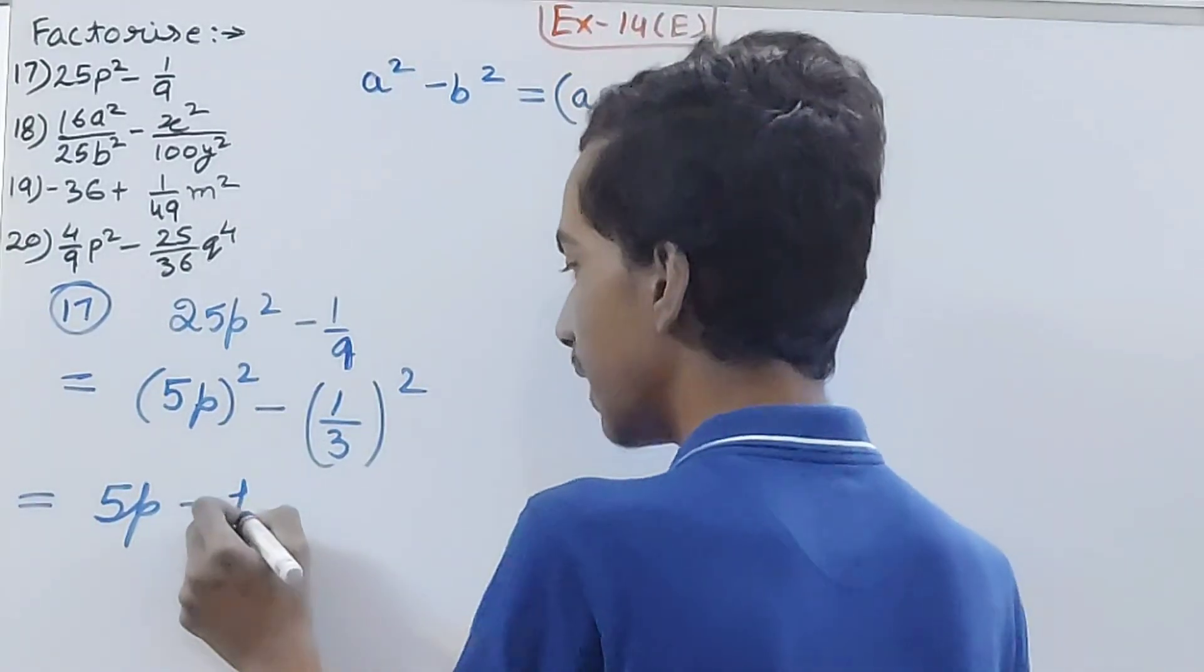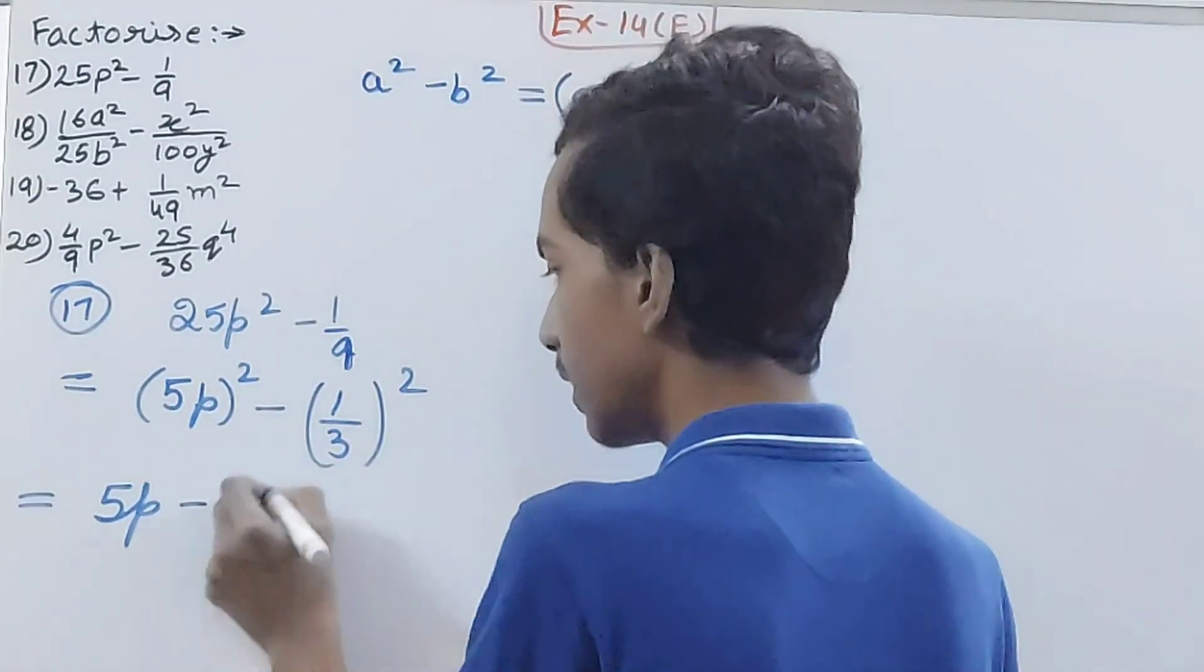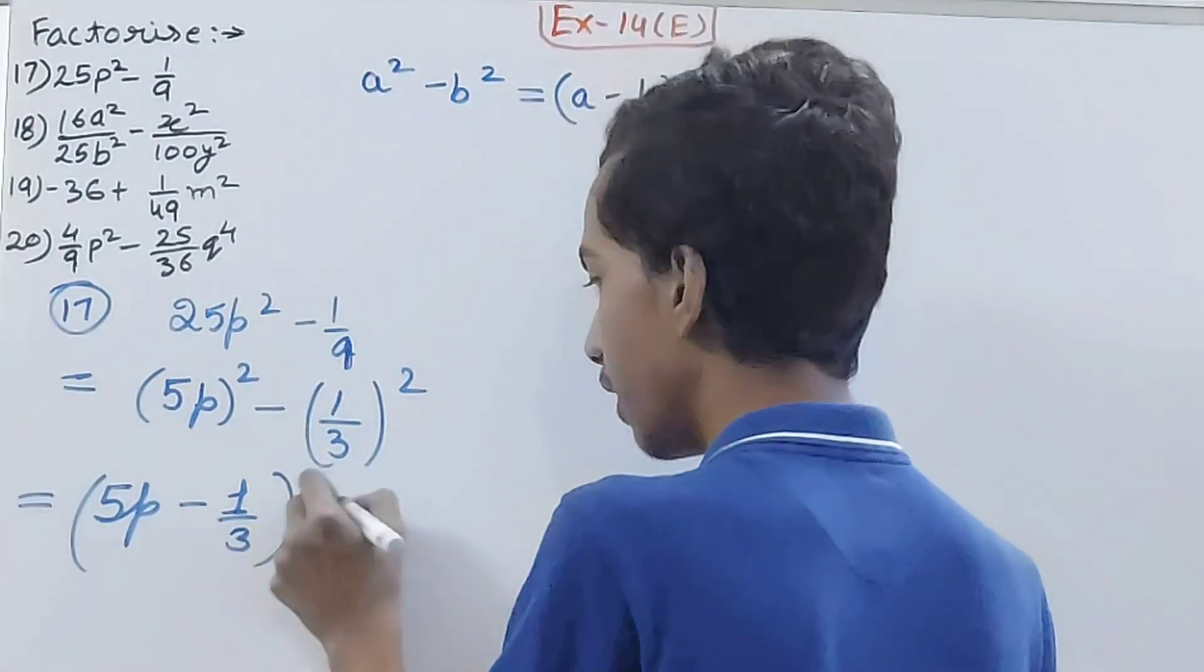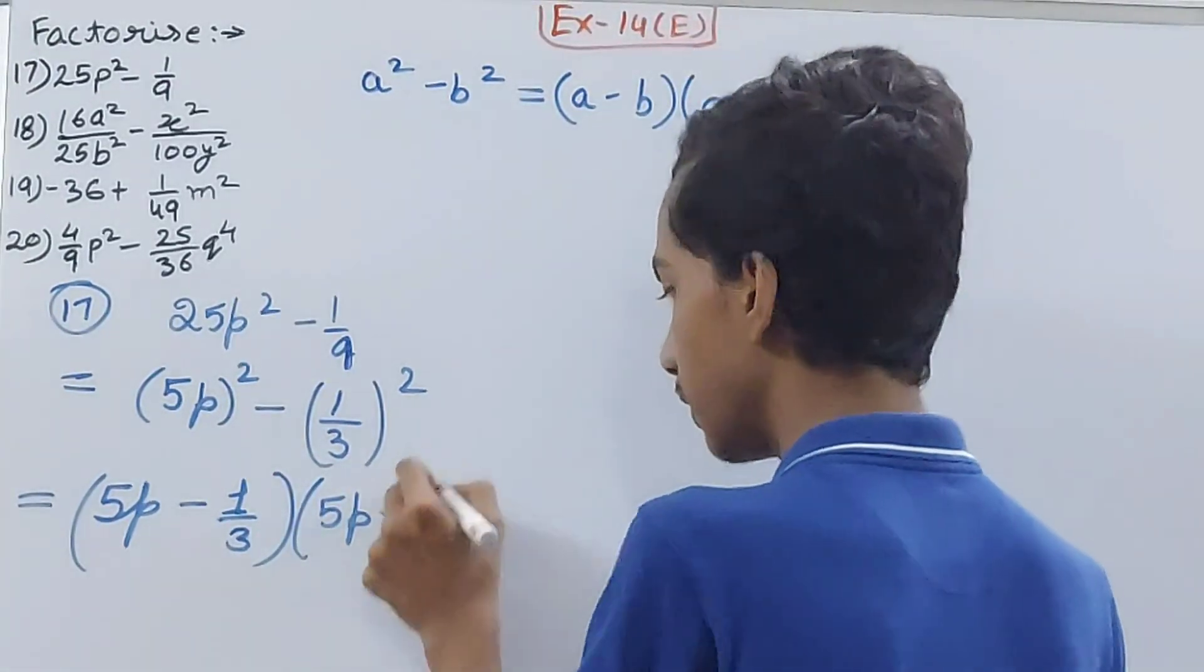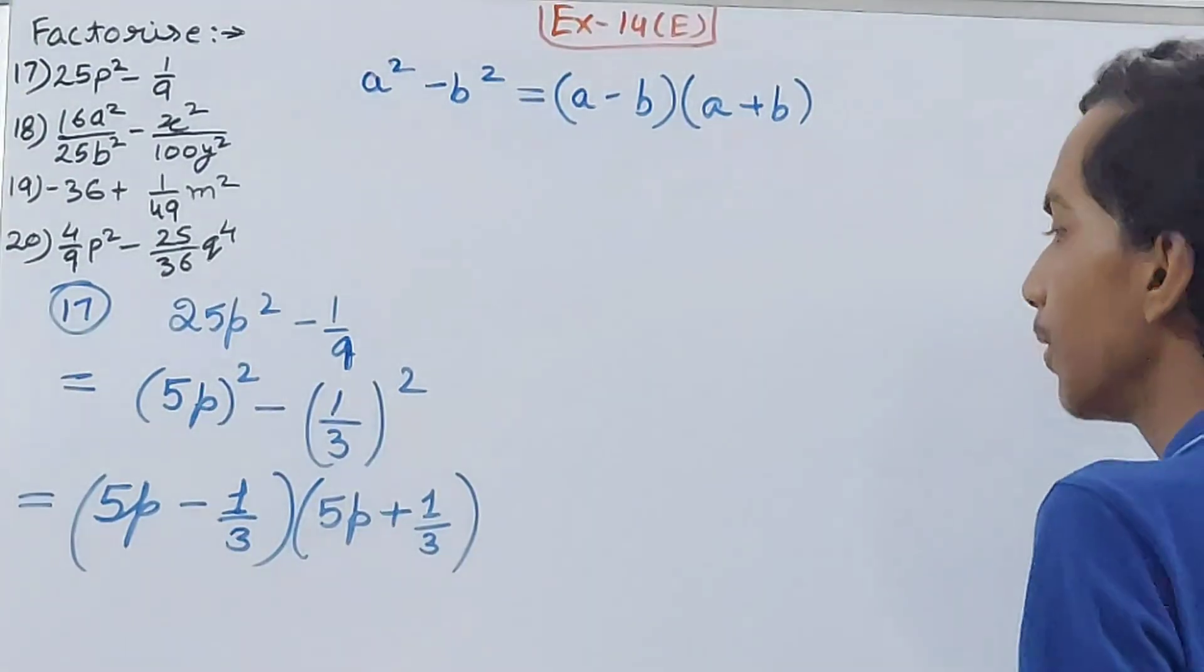(5p - 1/3)(5p + 1/3). That's your final answer. Now come to the next part.